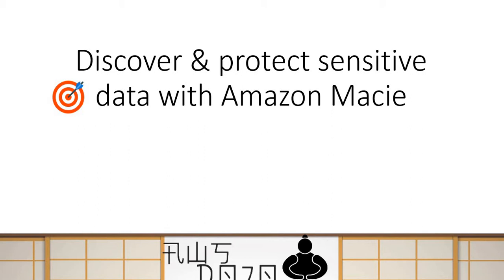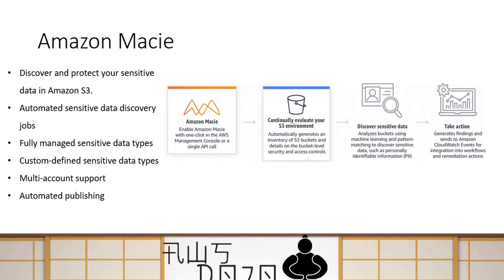Today we are going to talk about Amazon Macie. It's quite a new service and this service is used to discover and protect your sensitive data inside Amazon S3 buckets. So let's go and talk about this service a bit. If you have your data stored into S3 and you want to discover and protect any type of sensitive data stored there, then you can use Amazon Macie.